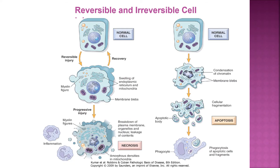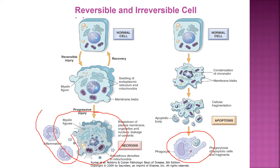This picture shows the difference between apoptosis and necrosis. In necrosis, the cell will swell, whereas in apoptosis it will shrink. There is inflammation in necrosis, whereas in apoptosis there is no inflammation.